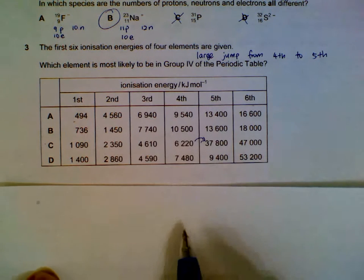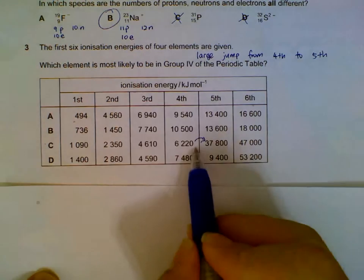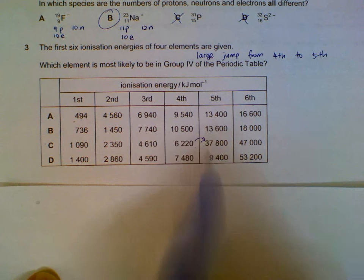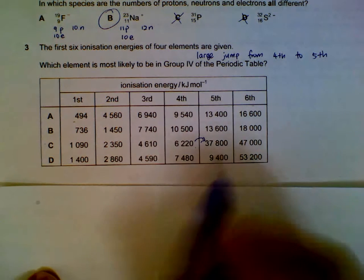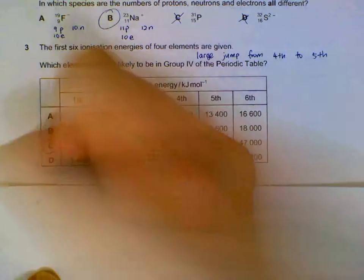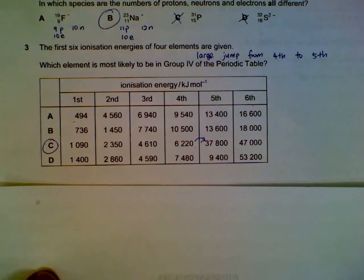The largest jump we will have will be for option C. There'll be around 30,000 difference in the ionization energy, so C will be in group four.